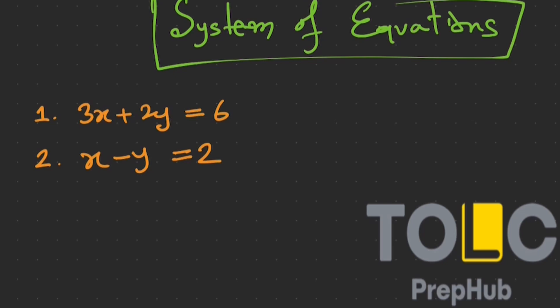Both equations have the same variables x and y. The objective is to find values for those variables that satisfy all the equations at the same time. In a system of equations, students need to find solutions for which both equations are valid.